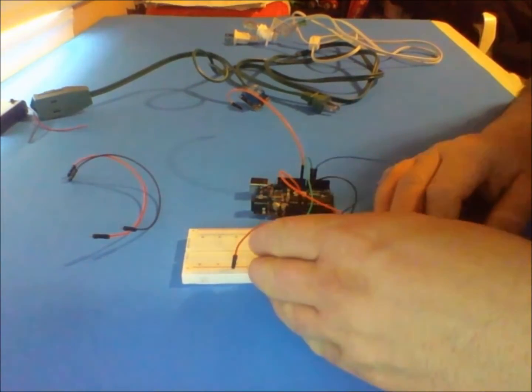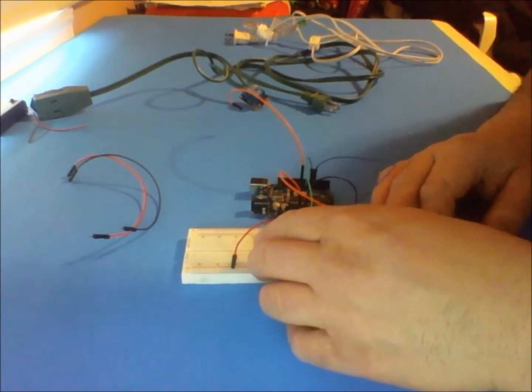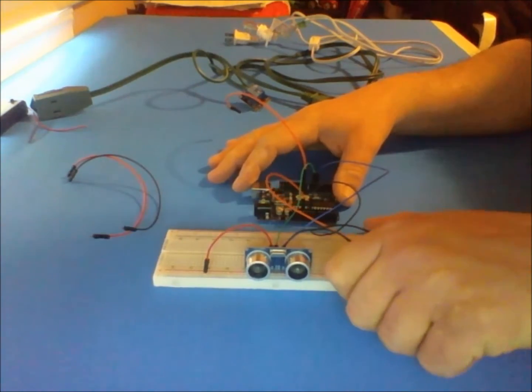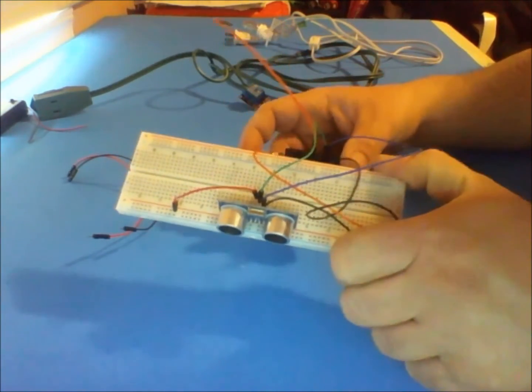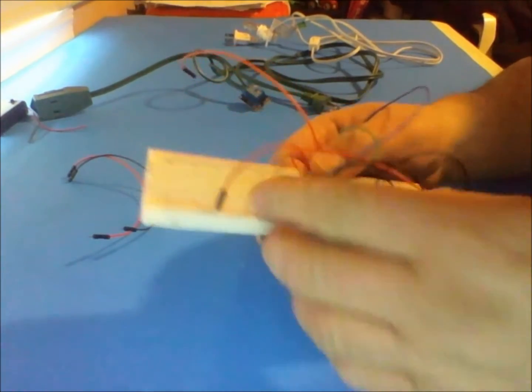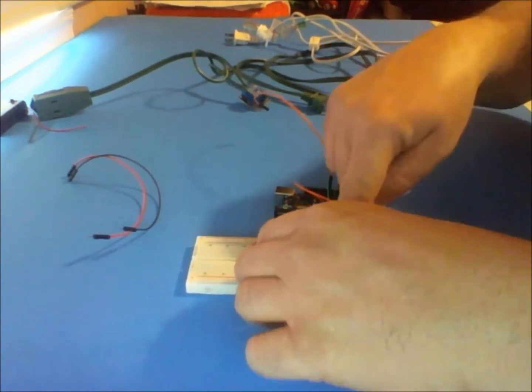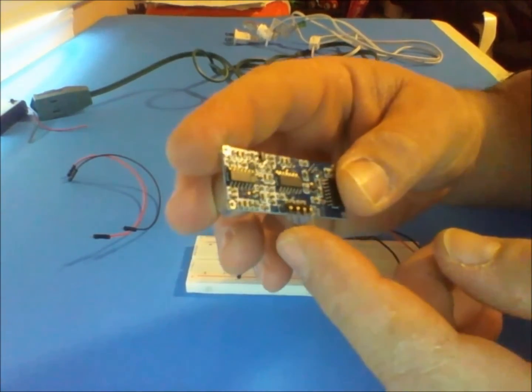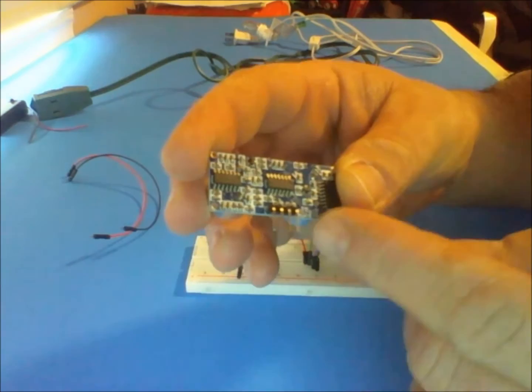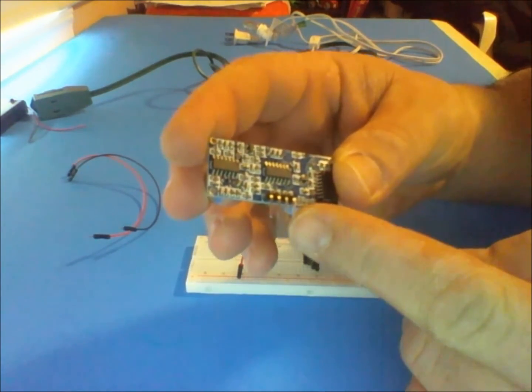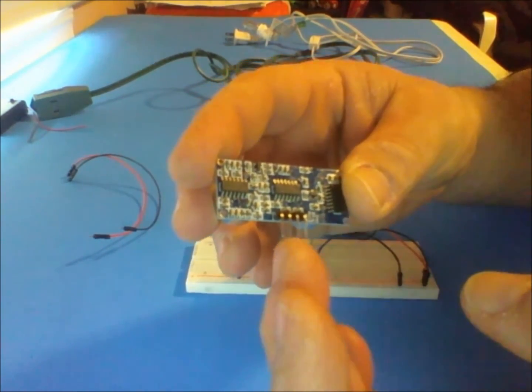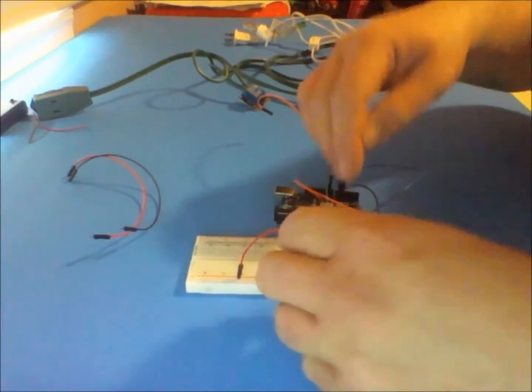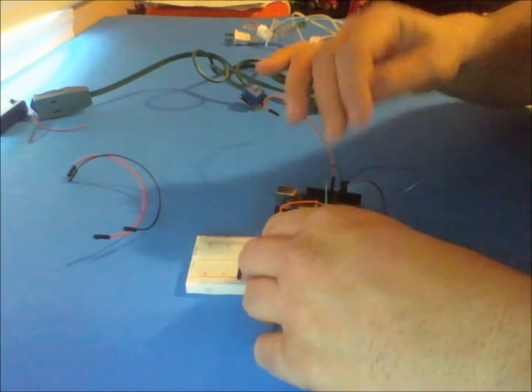I'm going to take the SR04 module and place it on the board. The SR04 has four pins in the back: the first one is ground, the first one on this end is 5 volts, then you've got the echo on this end and the trigger on this end.